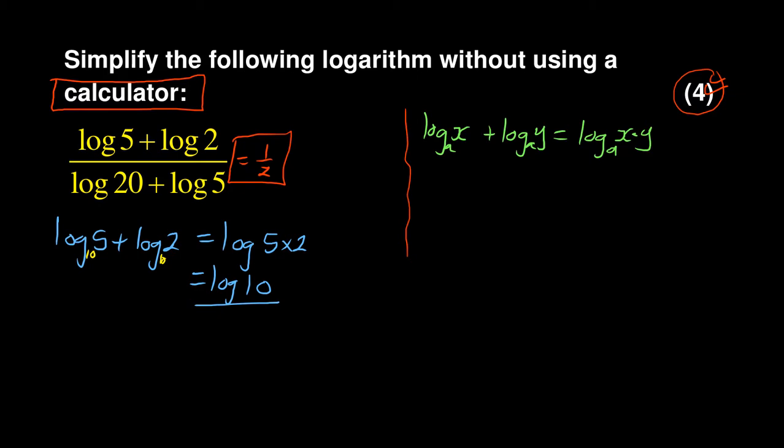Again you repeat the second one. You are going to be having log 20 plus log 5. You can see this one using the same method. It is log 20 times 5, right? And what is 20 times 5? It is log 100.